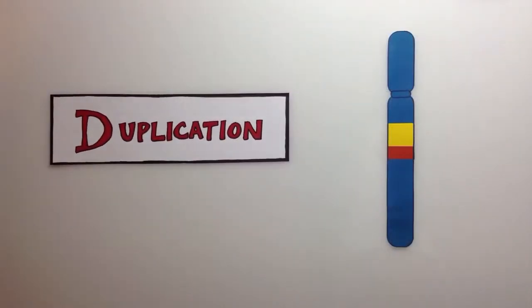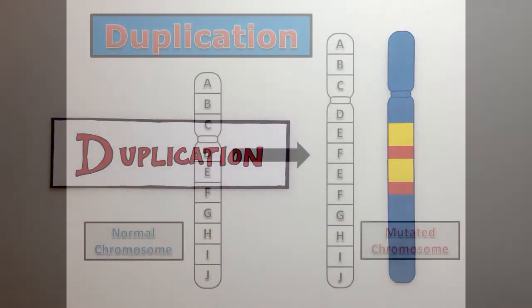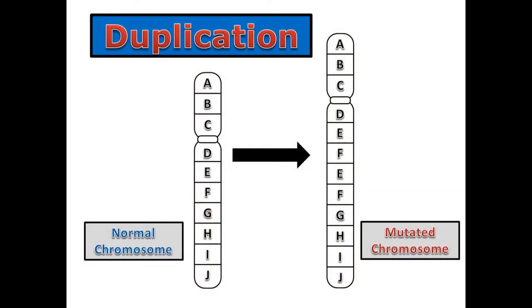Sometimes, a portion of the chromosome is duplicated more than once. A duplication can be recognized by noticing that a section of genetic material has been repeated along the chromosome.